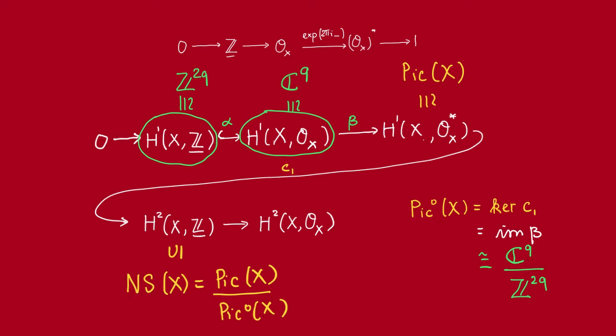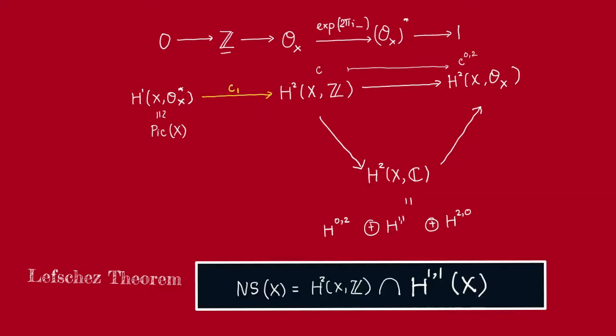But remember, our main star is the Neuron-Severry group, right? So let's come back and give a better description of this. So now we'll explain the so-called Lefschetz theorem. Remember that we said that the Neuron-Severry group must be the image of this map C₁ in here. We claim that its image is exactly the group of cycles of type (1,1). So let's see why that is. Also, by exactness, we know this image must be the kernel of this map. Let's understand what this map is.